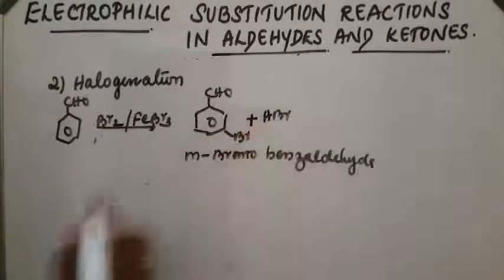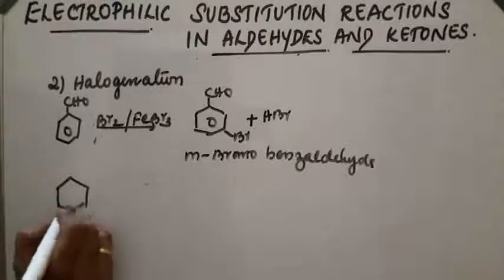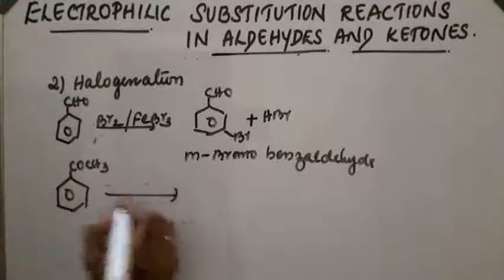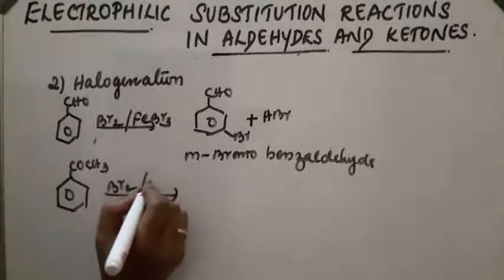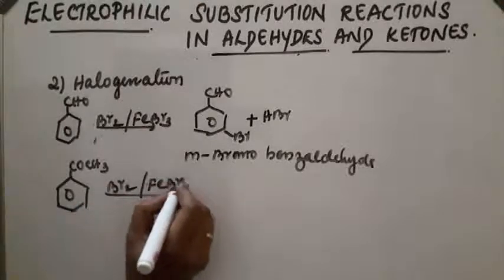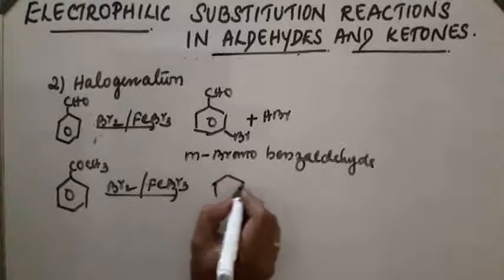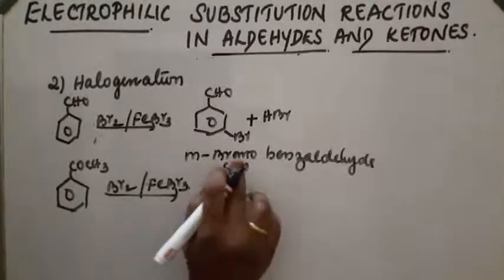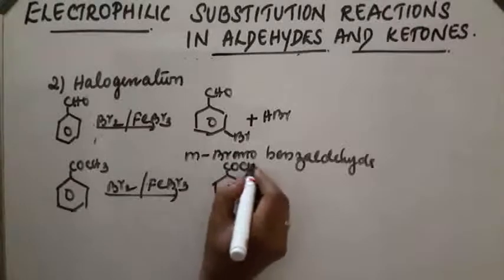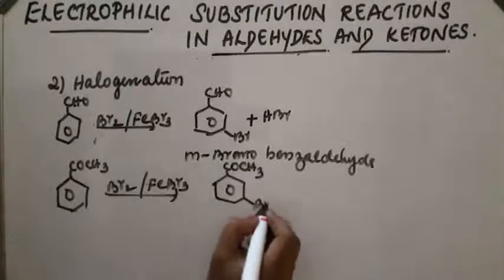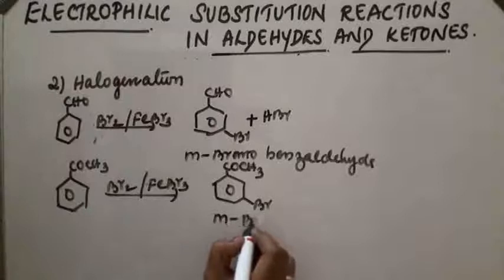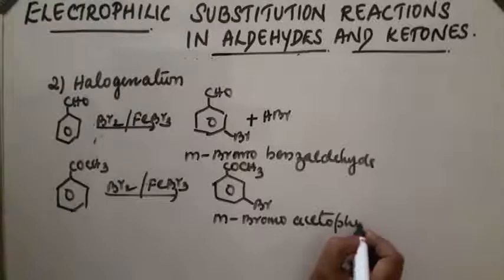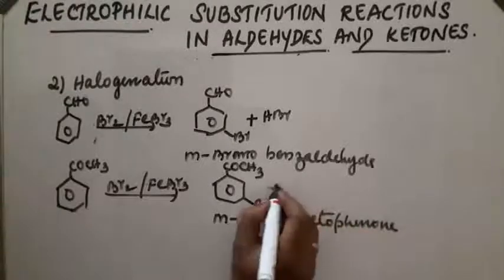Next, acetophenone (COCH3) on reaction with bromine and FeBr3 gives the product meta-bromoacetophenone, along with HBr.